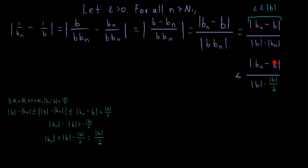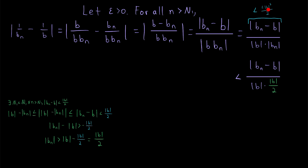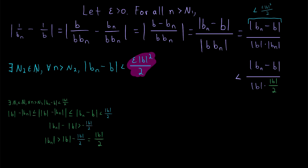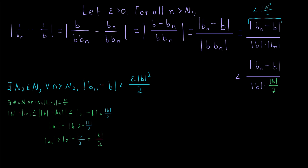That means in the expression we're interested in, if we replace the absolute value of bn with half the absolute value of b, we only make the expression bigger since we're dividing by a smaller number. So for n greater than N1, our expression is less than the absolute value of bn minus b divided by the absolute value of b times the absolute value of b over 2. Our original plan was to make the numerator less than epsilon times the absolute value of b, but now we see we also need to cancel a factor of absolute value of b and a factor of one half. So we'll want to make the numerator less than epsilon times the absolute value of b squared all divided by 2. Since bn converges to b, there exists a natural number N2 such that for every n greater than N2, the absolute value of bn minus b is less than epsilon times the absolute value of b squared over 2.